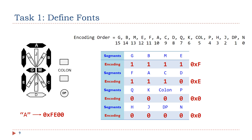If we convert the 16-bit binary encoding to hex, we will obtain FE00 in hex. Therefore, the letter A is encoded as FE00. We call this encoding the font for letter A.